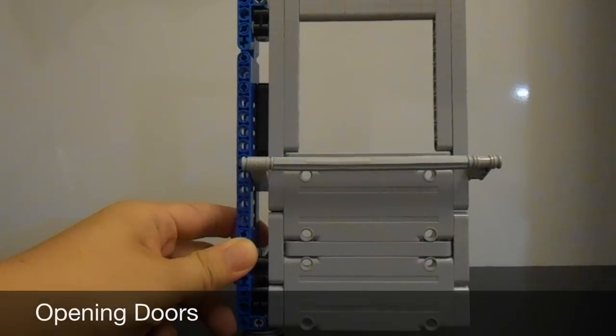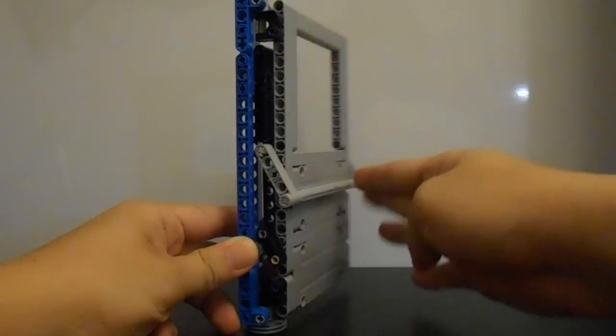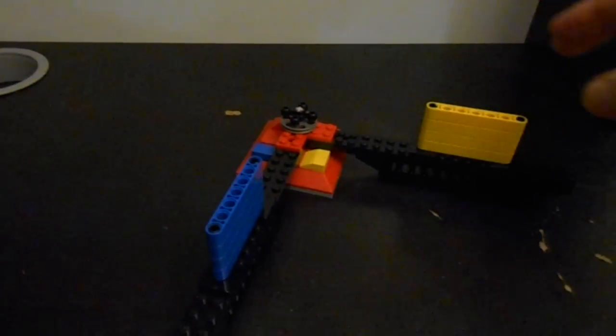The first mission is opening doors. To complete this mission, teams will need to push the lever down and open the door. The second mission is changing conditions. This mission only requires the team to rotate the arm 90 degrees counter-clockwise to earn points.